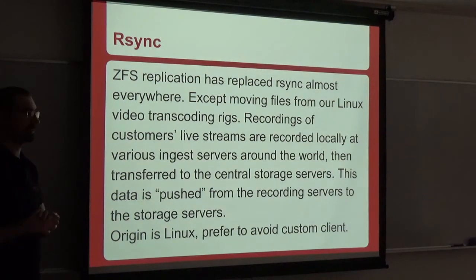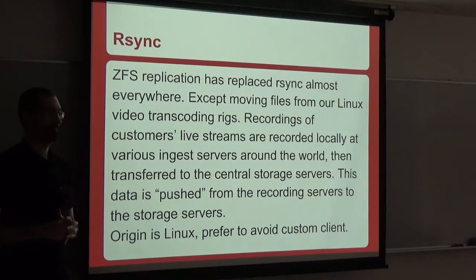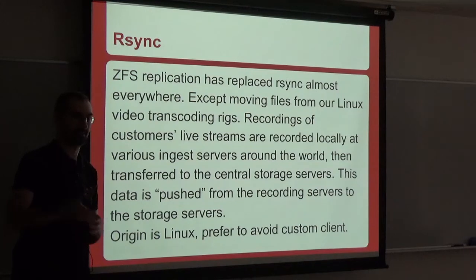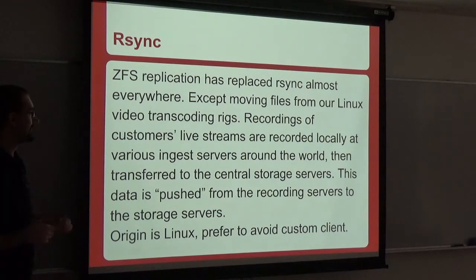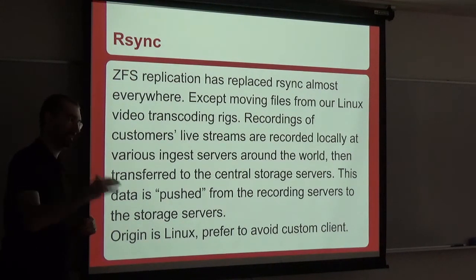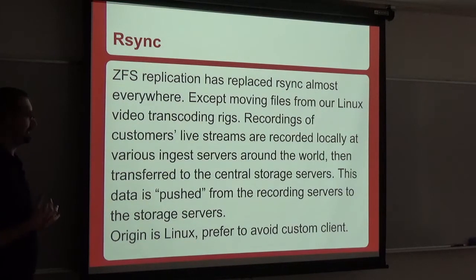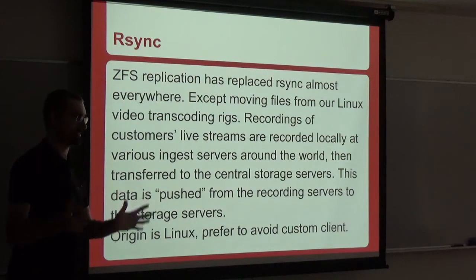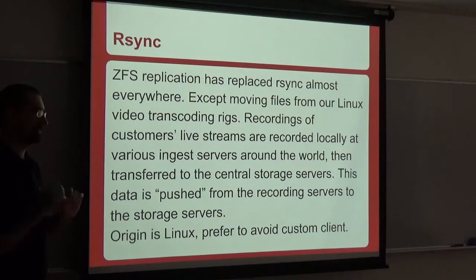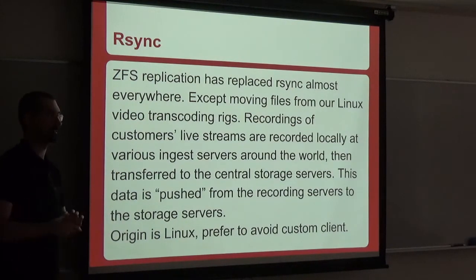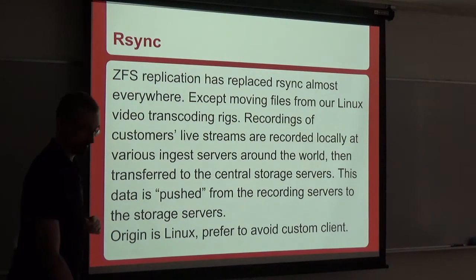Our third use case is recording servers. When people send a live stream, we record it on the receiving server and use rsync to sync recordings back to our main storage servers. Our video transcoding workers take the incoming live stream and make down-sampled versions for mobile or weak connections — and those run Linux. I really don't want to build a custom SSH version for Linux, so we prefer using stock SSH. In this case, the Linux server is pushing data to a FreeBSD server rather than pulling, and that kills all the performance.